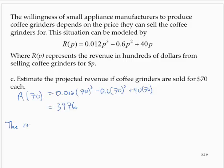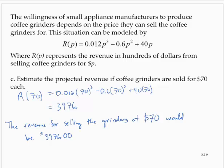So here then, the revenue for selling the grinders at $70 would be $397,600.